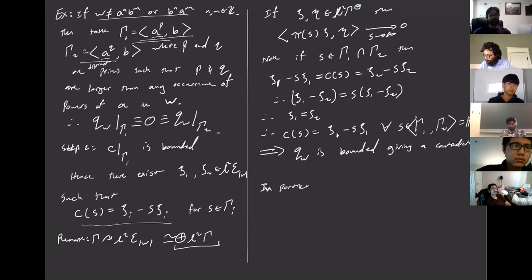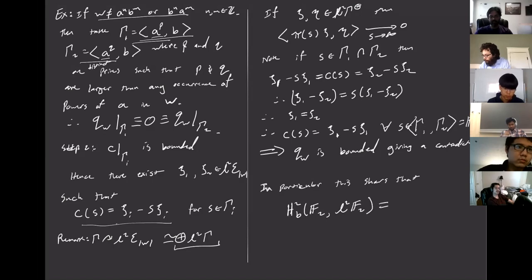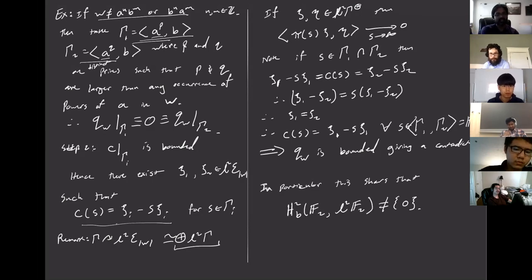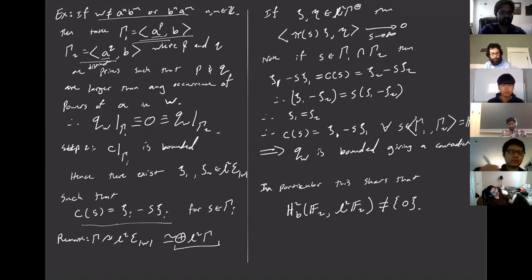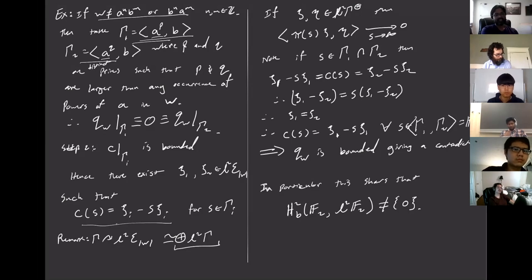This finishes the proof. As a consequence, the bounded two-cohomology H²_b(F₂; L²(F₂)) is non-trivial. Now I'd like to show this for all acylindrically hyperbolic groups — which is exactly what Bestvina, Bromberg, and Fujiwara prove — but to do that we first need to define acylindrically hyperbolic groups.